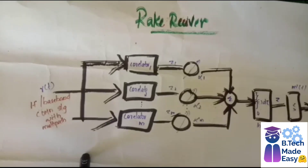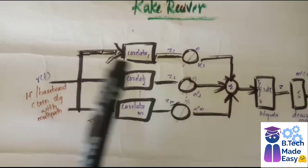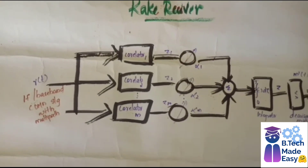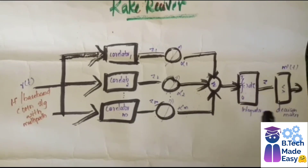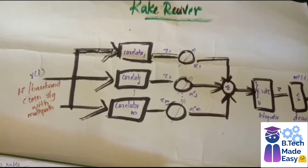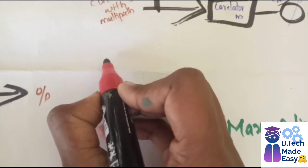The next type is time diversity, using the rake receiver as an example. The rake receiver has the ability to exploit multipath components, where each multipath component is produced based on time delay. The rake receiver has many sub-receivers and correlators, each handling different multipath components. These are extracted, decoded from individual multipath components to produce a better SNR, and then integrated. Multiple versions of the transmitted signal are received.